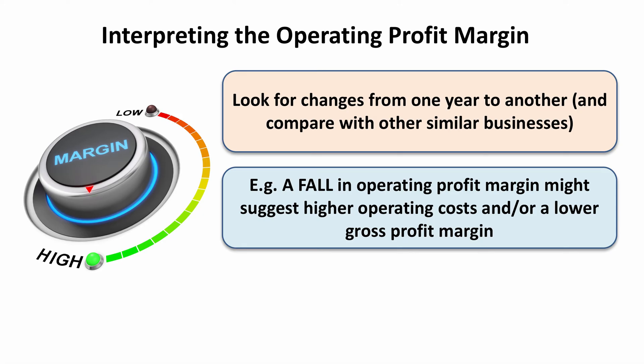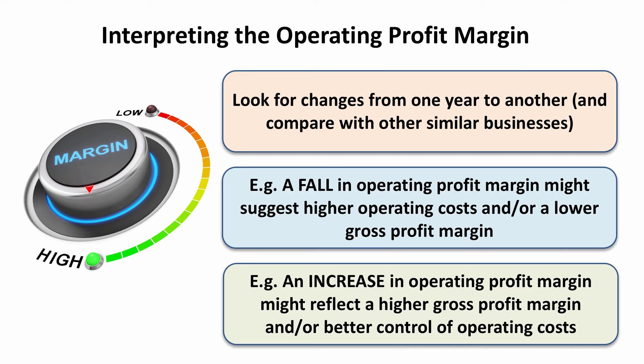A fall in the operating profit margin could be caused by a number of factors. For example, it could be that the gross profit margin has fallen, which means that other things being equal, the operating profit margin will also fall. It could mean that the gross profit margin hasn't changed, but the business is suffering from higher operating costs, thereby reducing the operating profit and the operating profit margin. Conversely, an increase in the operating profit margin could reflect the fact that the gross profit margin has improved, which will feed through to the operating profit margin. But it could also mean that the business has better control of operating costs — perhaps it's cut its operating costs, which improves the operating profit and therefore the operating profit margin.